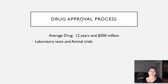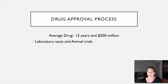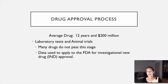Drug companies don't always get it right the first time, so they go back to the drawing board multiple times. Those hefty price tags encompass all their failed attempts. You can pretty safely say on average it's about 12 years from beginning to approval and about 200 million dollars or more. The steps are: first lab testing, then animal trials — most drugs don't get past that stage. After lab and animal data, they petition the FDA, and if approved, receive an Investigational New Drug approval, or IND, before human clinical trials can begin.